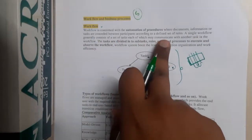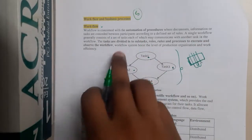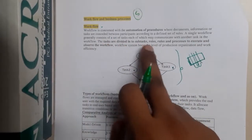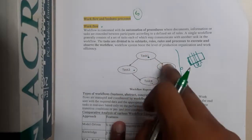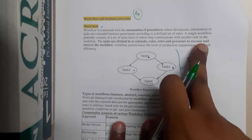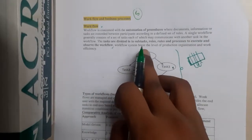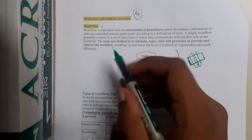Each task can communicate with another task in the workflow. They can communicate among themselves. The tasks are divided into subtasks, and they have roles, rules, and processes to execute and observe the workflow. Workflow systems boost the level of production, so basically these things will increase your productivity.